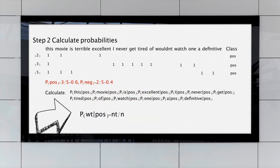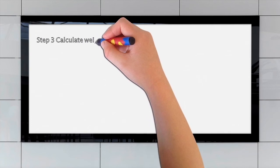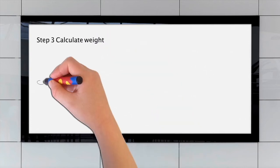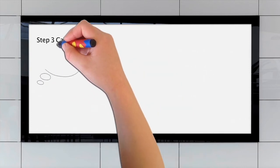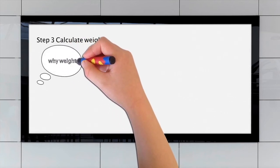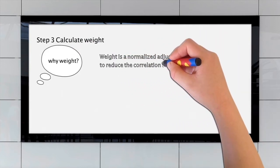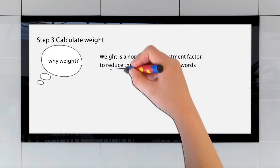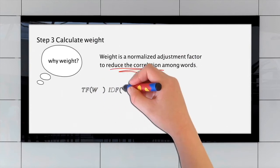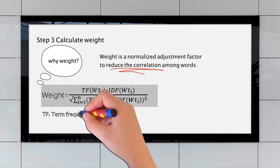Then, we should calculate the conditional probability. Step three, calculate weight. And there is a question: why introduce weight? Because weight is a normalized adjustment factor to reduce the correlation among words. Weight can be calculated by this formula with TF-IDF.